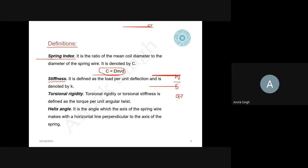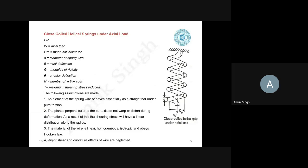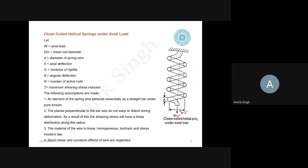Just as we have EI as the flexural rigidity in bending, in torsion we have GJ, where G is the modulus of rigidity and J is the polar moment of inertia — this is known as torsional stiffness or torsional rigidity. The fourth definition is the helix angle: it is the angle which the axis of the spring wire makes with the horizontal line perpendicular to the axis of the spring. In the figure, DM is the mean coil diameter, measured from center of wire to center of wire, W is the axial load, and D is the diameter of the spring wire.